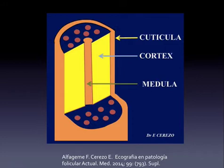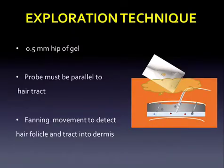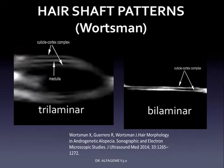The internal structure of the hair shaft has three parts: the cuticle, the cortex, and the medulla — this is the normal structure in medullated hairs. The exploration technique requires a large heap of gel, approximately 0.5 to 1 cm. The probe must be parallel to the hair tract because the insertion of the hair follicle is oblique, and we perform a specific movement to detect the follicle into the dermis. According to Dr. Bosman, the hair follicle may be trilaminar in medullated hair shafts or bilaminar in non-medullated hair shafts.